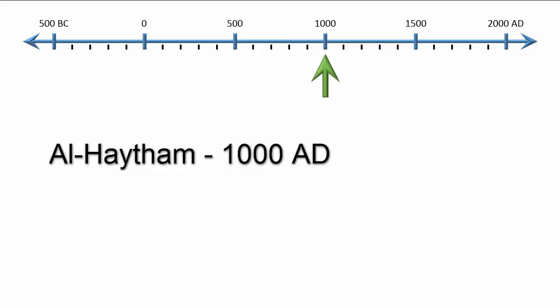In 1000 AD, Al-Haytham showed that the eye did not emit light but received it. He used a pinhole camera as evidence. For further proof, he observed that it is painful, in fact harmful, to look at the sun, showing that the eye is not capable of handling such light.